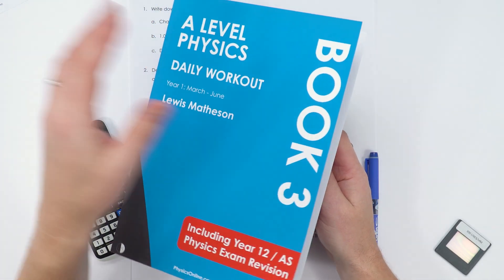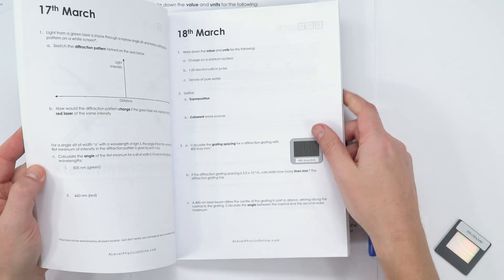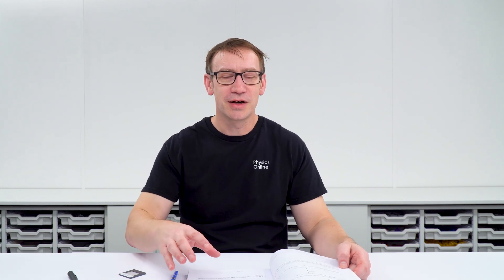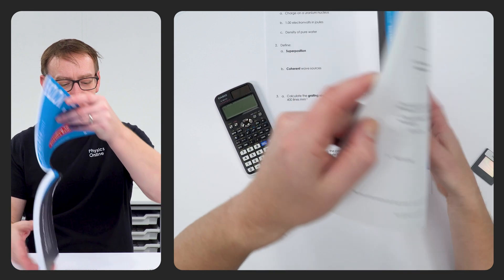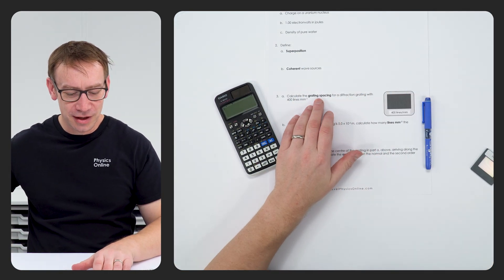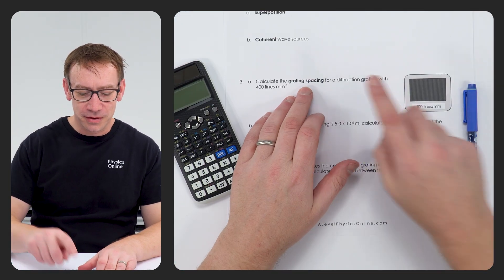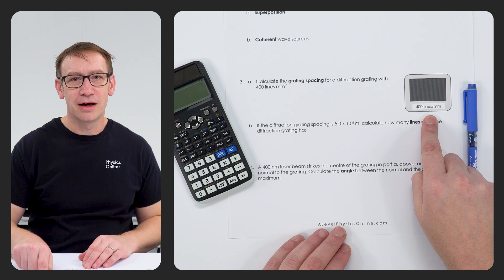This question actually came from one of my daily workout books. This is book three, which is for the later part of year 12 and includes lots of information and questions about all the practical activities you're going to be covering in your first year of A-level physics. The first part is to calculate the grating spacing for a diffraction grating with 400 lines per millimetre.